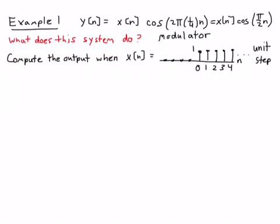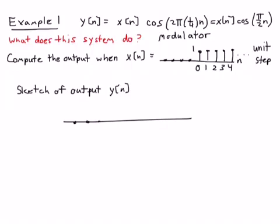All right, so if we're doing that with the system multiplies the input by this cosine, well, wherever the input is 0, obviously the output will be 0. So we can automatically say that the output is going to be 0 for all n less than 0. So if I just start doing a sketch of the output, y[n], then we know for sure it's going to be 0 before n equals 0.